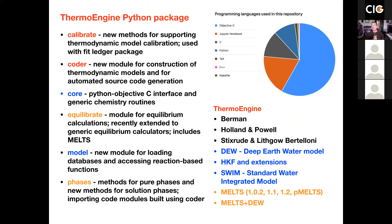Right now, the Enki package contains the thermodynamic databases of Berman, Holland and Powell, and Stixrude with Lithgow-Berbertoloni. Berman is aimed at low pressure phase equilibrium. Holland and Powell is slightly higher pressure, including the lower mantle, with a wide variety of mineral solid solutions. The database of Stixrude and Lithgow-Berbertoloni is aimed at calculating phase equilibria at very high pressures, particularly in the Earth's mantle all the way down to the core and other high-pressure bodies.